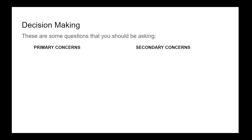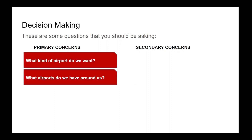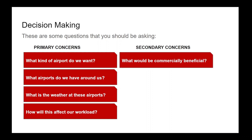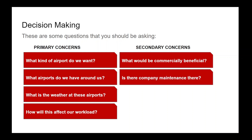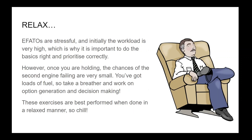When it comes to decision making, there are several things to think about. Primary concerns: what kind of airport do we want, what airports do we have around us, and what is the weather at those airports? Secondary concerns: what would be commercially beneficial for passengers and company, is there company maintenance, and do we have a plan for once we've landed? AFATOs are stressful and the initial workload is very high, which is why doing the basics right matters. Once you are holding, the chances of the second engine failing are very small — you've got loads of fuel, so take a breather and work on option generation and decision making.